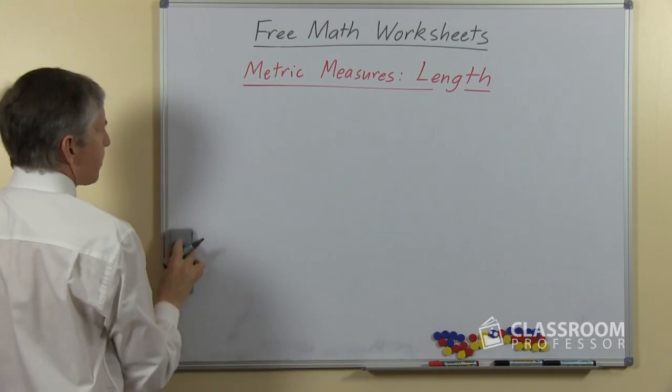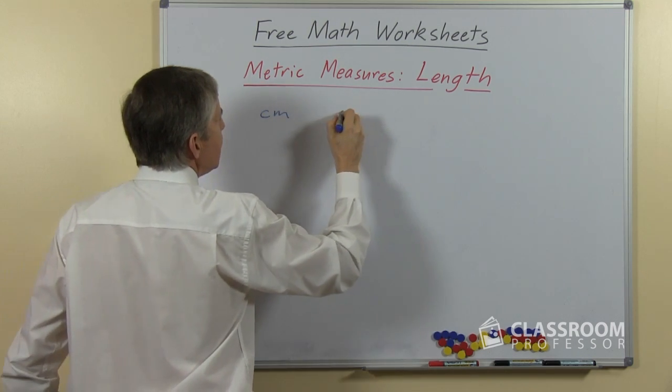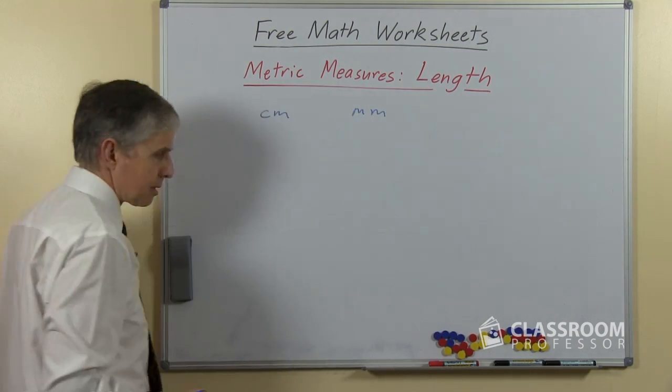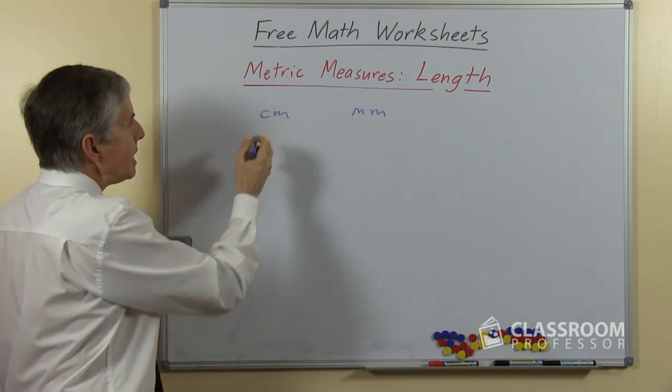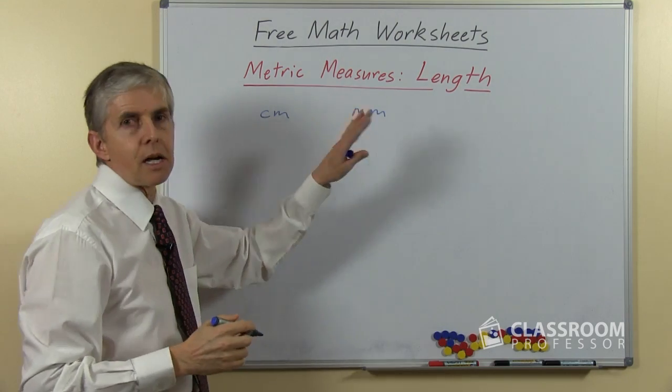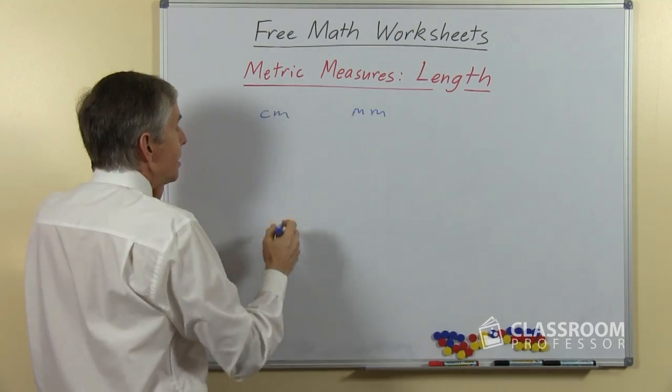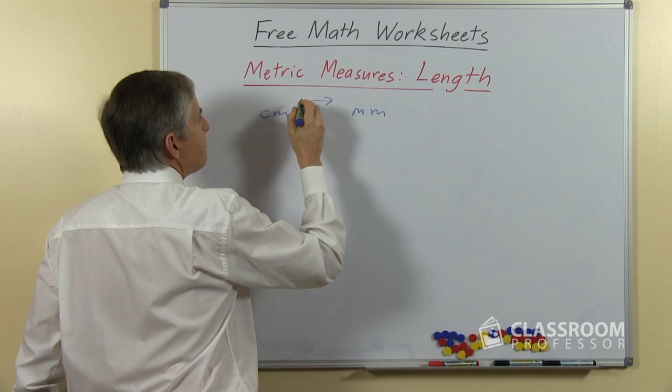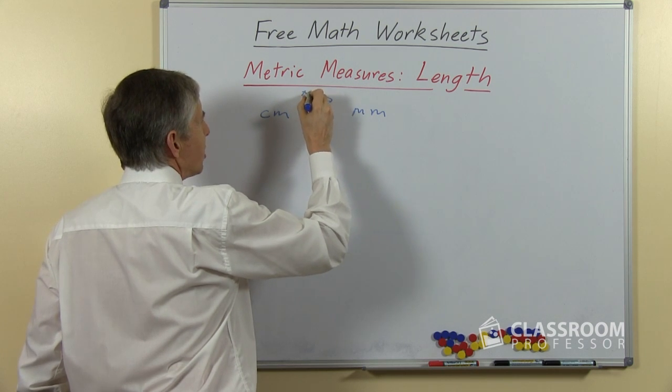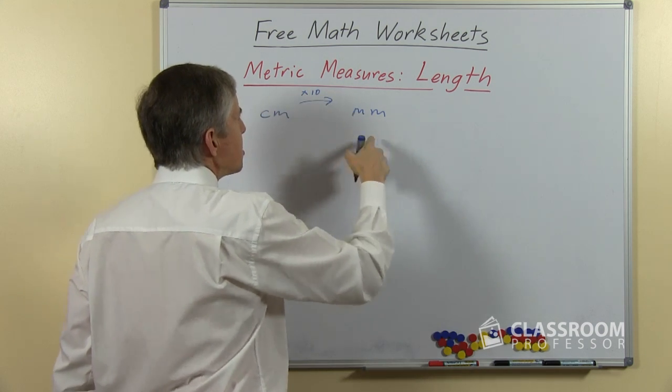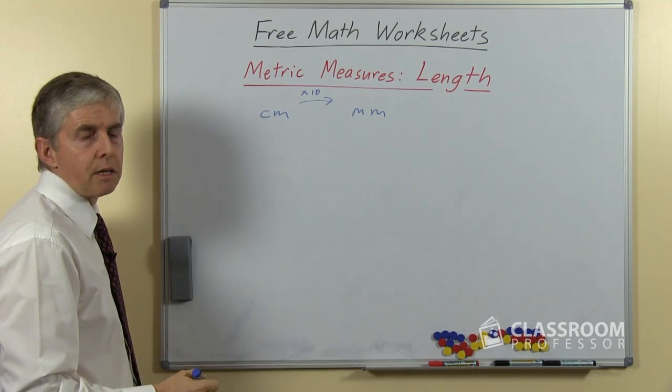Last sort, and we'll do this quickly. Centimeters to millimeters. Now centimeters are hundredths of a meter, millimeters are thousandths of a meter, and so the difference here, if we're converting centimeters to millimeters, we're going to multiply by 10.